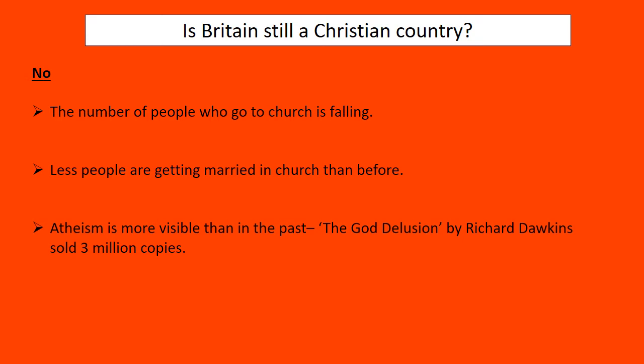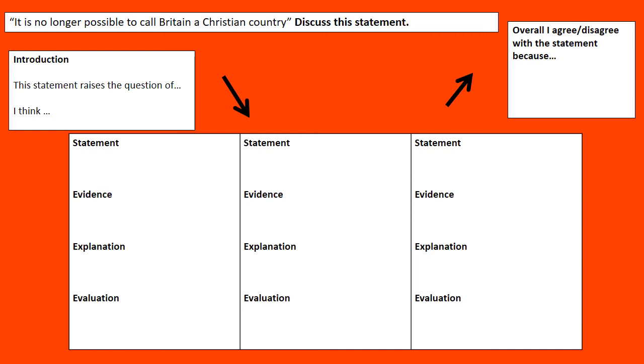Third reason against: atheism is more visible than in the past. The key example here is Richard Dawkins' book 'The God Delusion', which sold three million copies in this country - a significant number, suggesting we're becoming less religious. However, you could criticize this by noting that 59% of people still identify as Christian, so a popular atheist book doesn't mean Christianity is no longer dominant. Or you could argue that the Queen is still formally head of the Church of England, making Britain still formally a Christian country.